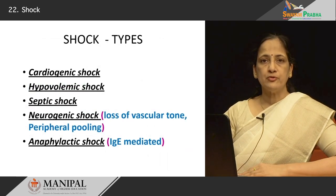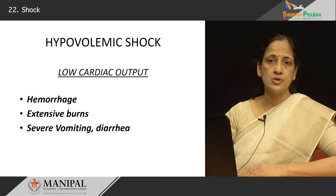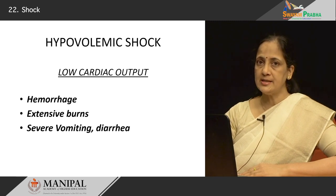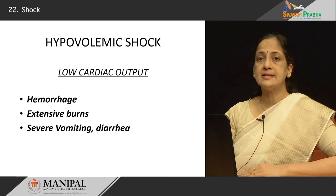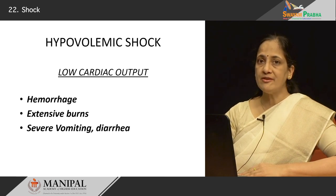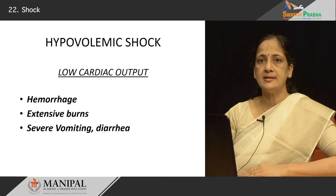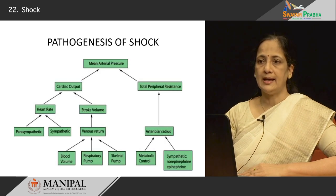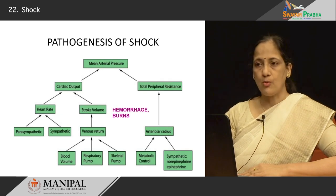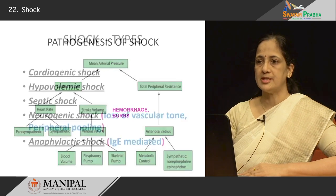The second type of shock is hypovolemic shock. Here again, the main mechanism is low cardiac output. This occurs when a patient has massive hemorrhage — for example, a road traffic accident victim with serious injuries causing massive blood loss. Patients with extensive burns lose a lot of fluid from the damaged skin surface, resulting in hypovolemia. Patients with severe vomiting and diarrhea also have a net decrease in intravascular fluid volume. Therefore, the stroke volume falls, cardiac output drops, arterial pressure drops, and the pathogenic mechanism proceeds accordingly.